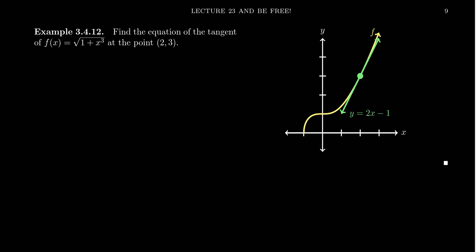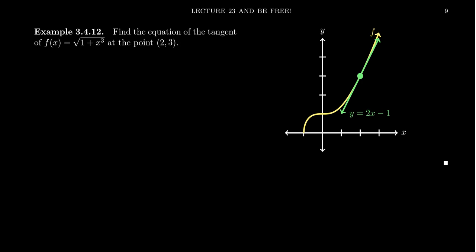Let us find the equation of the tangent line of the function f(x) equals the square root of 1 plus x cubed at the point of tangency being (2,3). You can see a picture of the function f illustrated here in yellow and the tangent line that we're going to compute its equation for in just a moment in green.